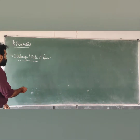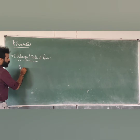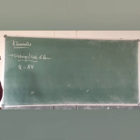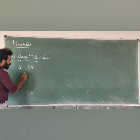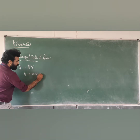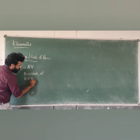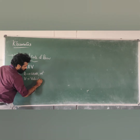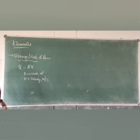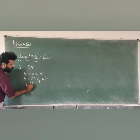Rate of flow, or discharge, is normally denoted by the letter Q. Q is equal to A times V — where A is the area in meter square and V is the velocity of flow in meter per second. So the discharge unit is meter square into meter per second, which gives meter cube per second.